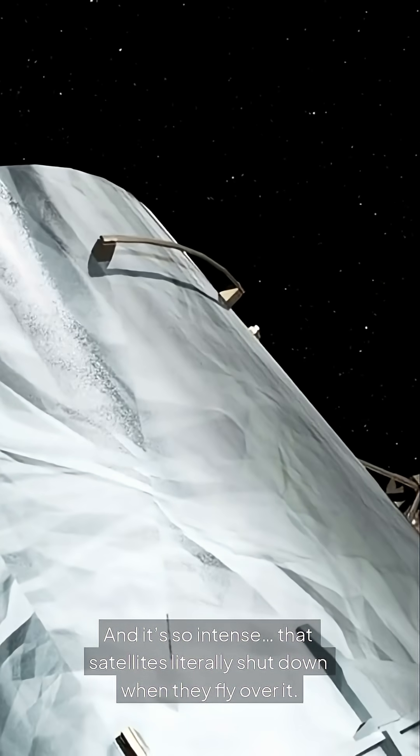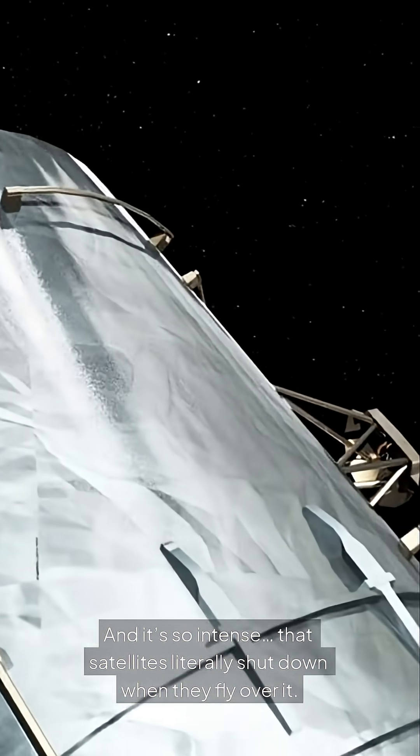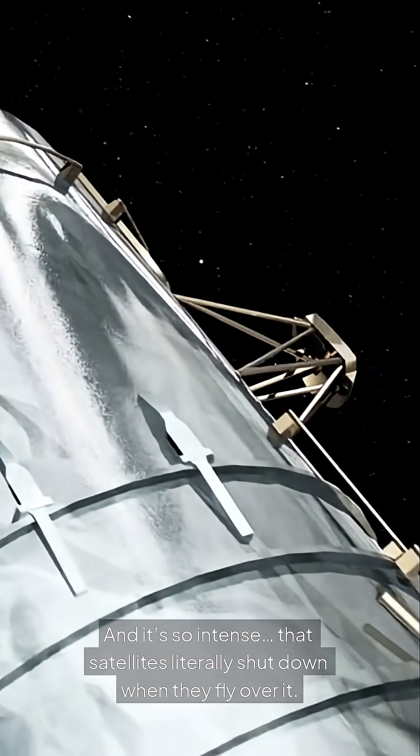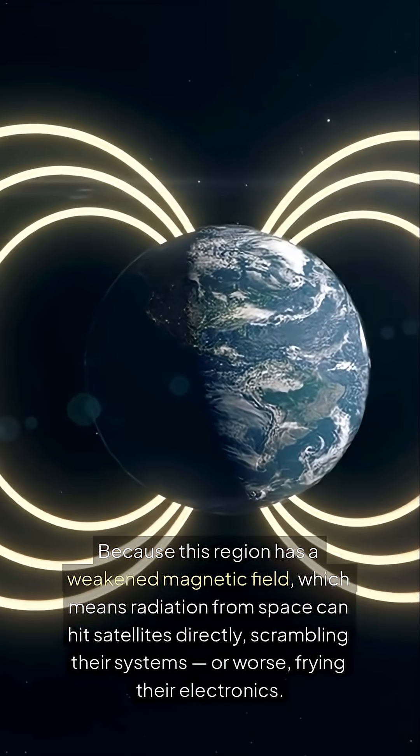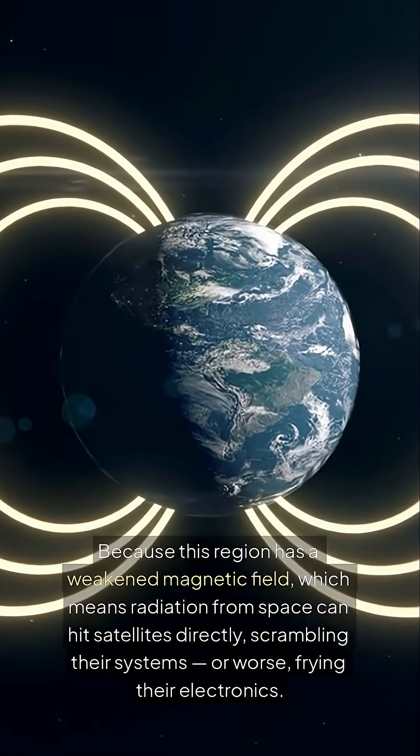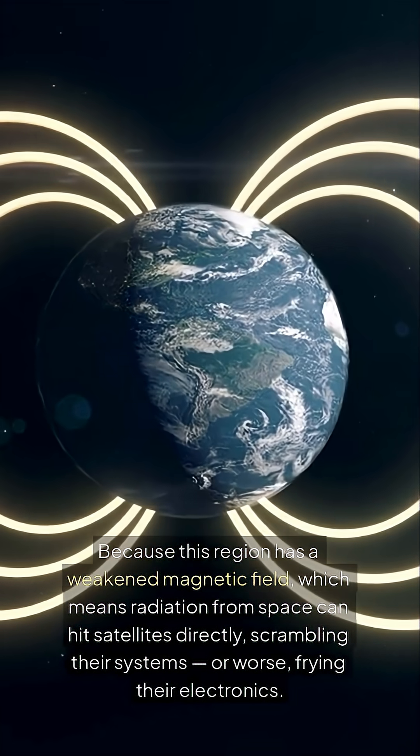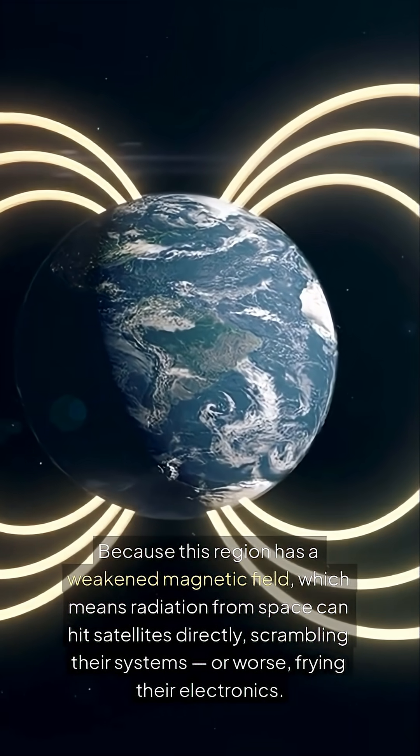And it's so intense that satellites literally shut down when they fly over it. Why? Because this region has a weakened magnetic field, which means radiation from space can hit satellites directly, scrambling their systems, or worse, frying their electronics.